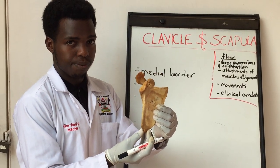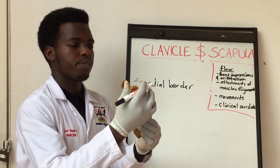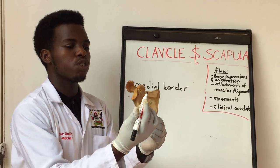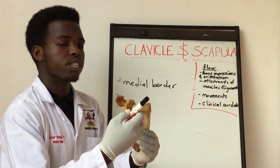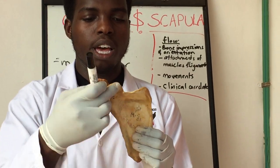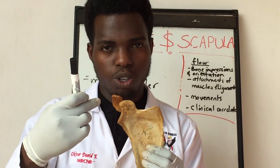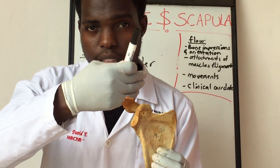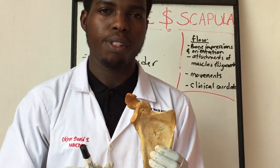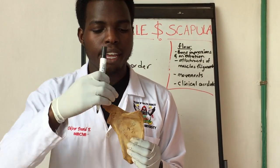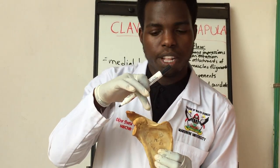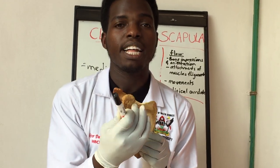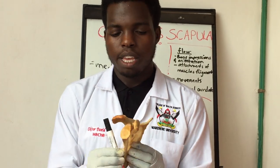The medial border and the lateral border together form the inferior angle of the scapula. Superiorly, there is the superior border, and on the superior border there is the suprascapular notch. The suprascapular notch is traversed by the transverse scapular ligament, leaving a canal where the suprascapular nerve and vein pass through, while the suprascapular artery passes superior to the transverse scapular ligament. The suprascapular notch is located at the junction of the medial two-thirds and lateral one-third of the superior border.